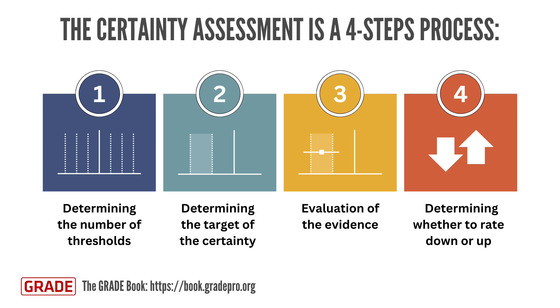Step 2: Determining the target of the certainty rating. The second step involves identifying the target of the certainty rating, which typically corresponds to the range within which the point estimate lies.